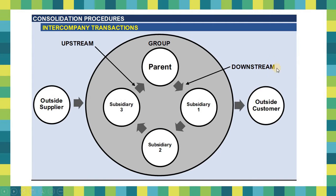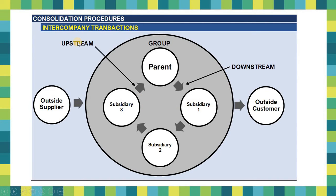We have two types of intercompany sales: the downstream sale and the upstream sale. When we say downstream sale, the seller is the parent and the buyer is the subsidiary. That is why it is called downstream — the sales transaction flows from the parent to the subsidiary. The intercompany seller is the parent and the intercompany buyer is the subsidiary. For an upstream sale, the intercompany seller is the subsidiary and the intercompany buyer is the parent. Aside from upstream and downstream sale, there could also be a sale between subsidiaries of a parent, and this is accounted for similarly to an upstream sale.